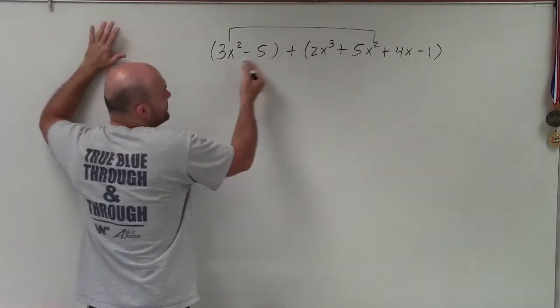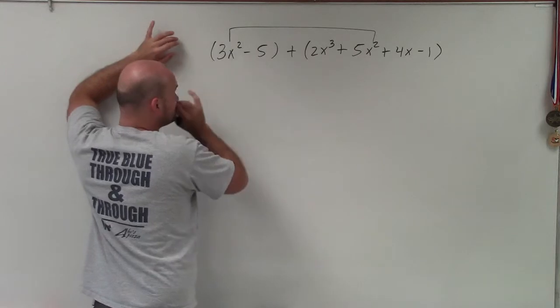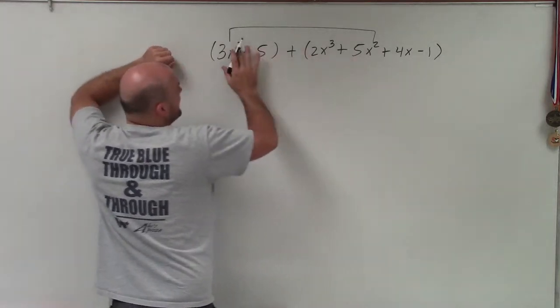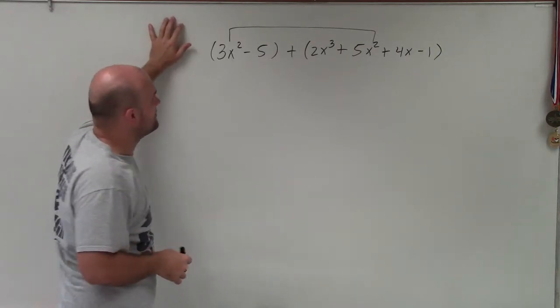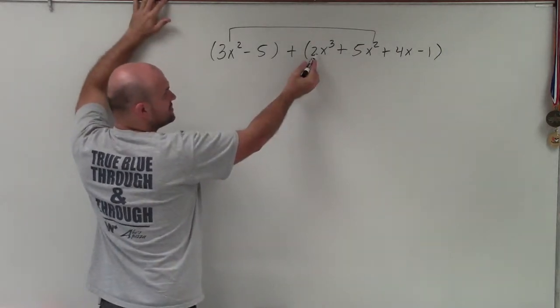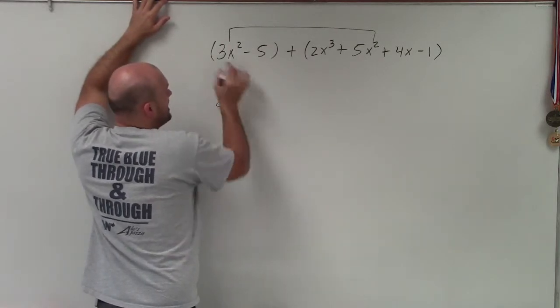So when I'm looking at combining like terms with exponents, I'm looking at one thing. They've got to have the same base and the same power when looking into combining them. So there's nothing I can combine with 2x cubed, and that's a positive. So I'm just going to rewrite that, 2x cubed.